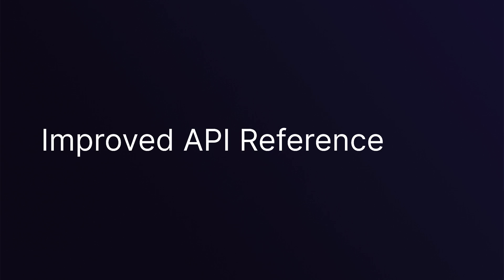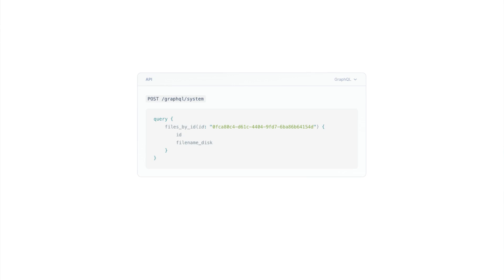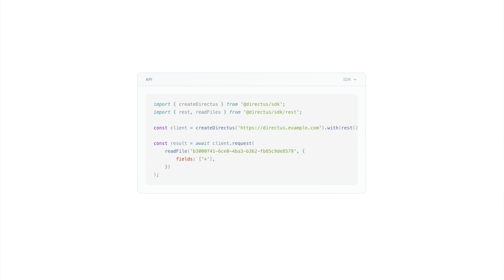Speaking of API reference — an improved Directus API reference. Directus has almost 200 endpoints for working with your data, your files, and projects. We've given our API reference some love and introduced a new component that allows you to see the REST, GraphQL, or SDK examples easily. It remembers your preference so you can always see what's relevant to you.